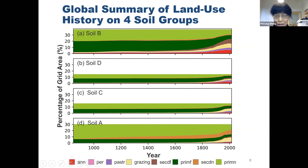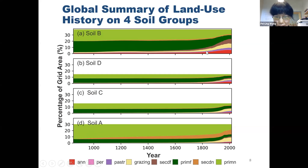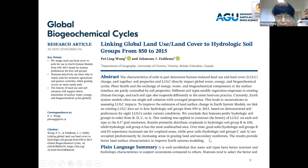Using the same methodology, we can do this for the full time history from 850 to 2015 based on the land use and land cover history. We allocate land use and land cover to four types of soil. As time goes on, soil B shows a lot of increases in important land uses — cropland and pasture. And soil A, although it's a poor soil, under population growth we start to see more and more human land uses on it. We just published this in Global Biogeochemical Cycles.